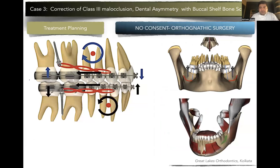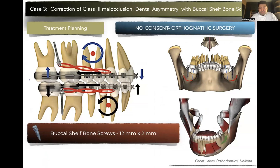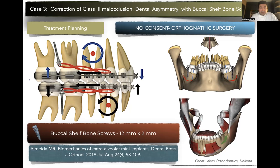In this case, there was no concern for orthognathic surgery, and the patient was skeptical about any tooth removal. Since we decided to use buccal shelf screws, we used a 2x12mm screw. The biomechanics of buccal shelf and IZC screws are given by Almeida in the Dental Press Journal — a wonderful article from 2019 — which covers how biomechanics of the buccal shelf varies with respect to height of the bone and height of the buccal shelf.